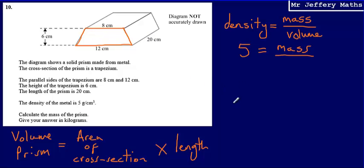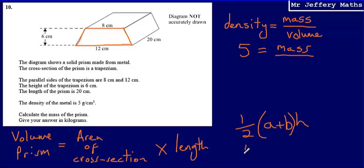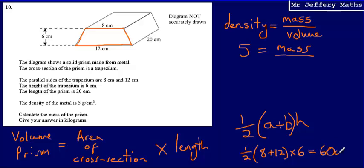To work out the area of the trapezium, we use the formula: half times (a + b) multiplied by h, where a and b are the parallel sides and h is the height. So that's half multiplied by (8 + 12) multiplied by 6. Half of 20 is 10, and 10 multiplied by 6 gives 60 centimetres squared. So the area of the cross-section is 60 cm².